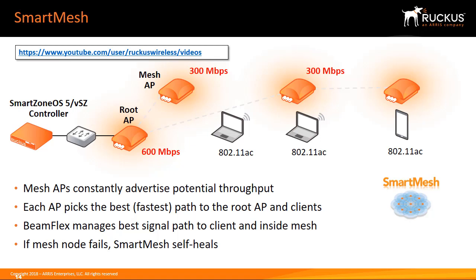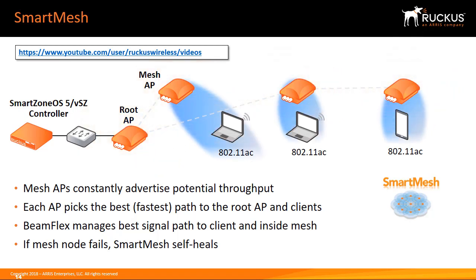As a result of taking an extra hop, the third meshing AP's capacity advertisement is 200 Mbps. Wireless clients associate with the meshing APs. BeamFlex manages the best signal path to clients inside the mesh and is also used to manage the best signal paths within the mesh topology. Mesh nodes constantly monitor the mesh links, and if any links experience problems or go down, the remaining nodes automatically reconfigure without intervention.